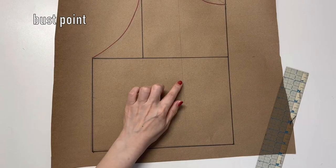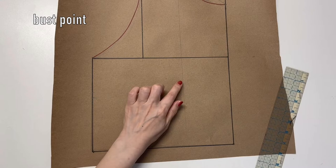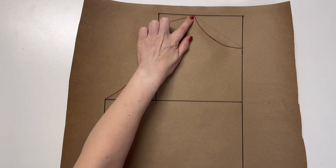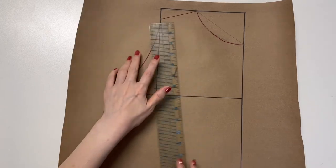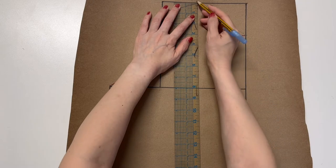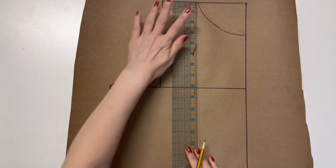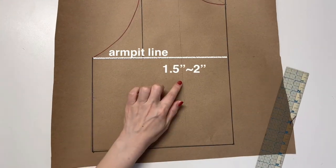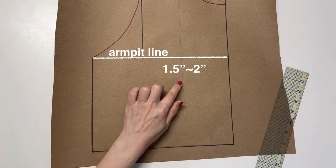The next step is to mark the bust point. Look at yourself in the mirror and find it or figure it out through your cloth. If your size is similar to mine, do like this. Draw a line from the neckline down. Bust point is about one and a half inches to two inches down from the armpit line.